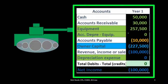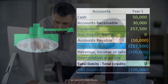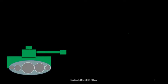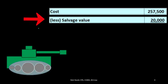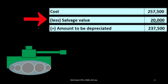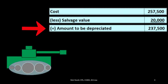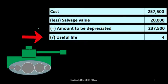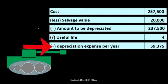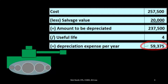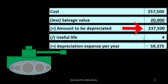The most common baseline estimate is the straight-line method, which we'll compare to the alternate declining balance method. For straight-line, we take the cost minus the salvage value — what we believe we can scrap it for at the end of its useful life — giving a depreciable amount of $237,500. Dividing by the useful life gives a straight-line depreciation of $59,375 per year for four years, resulting in cumulative depreciation of $237,500 and a book value of $20,000.